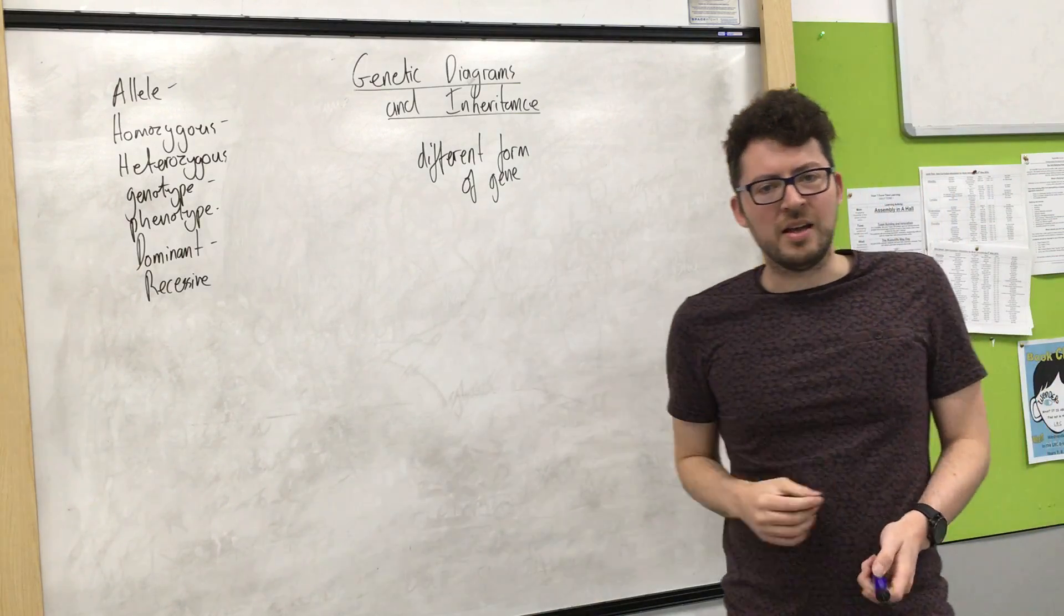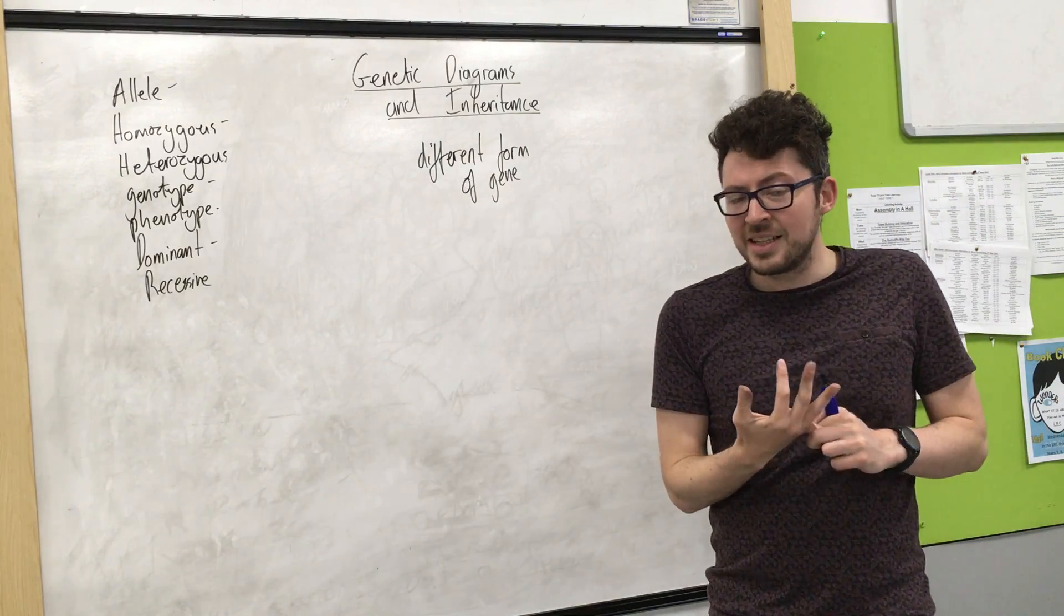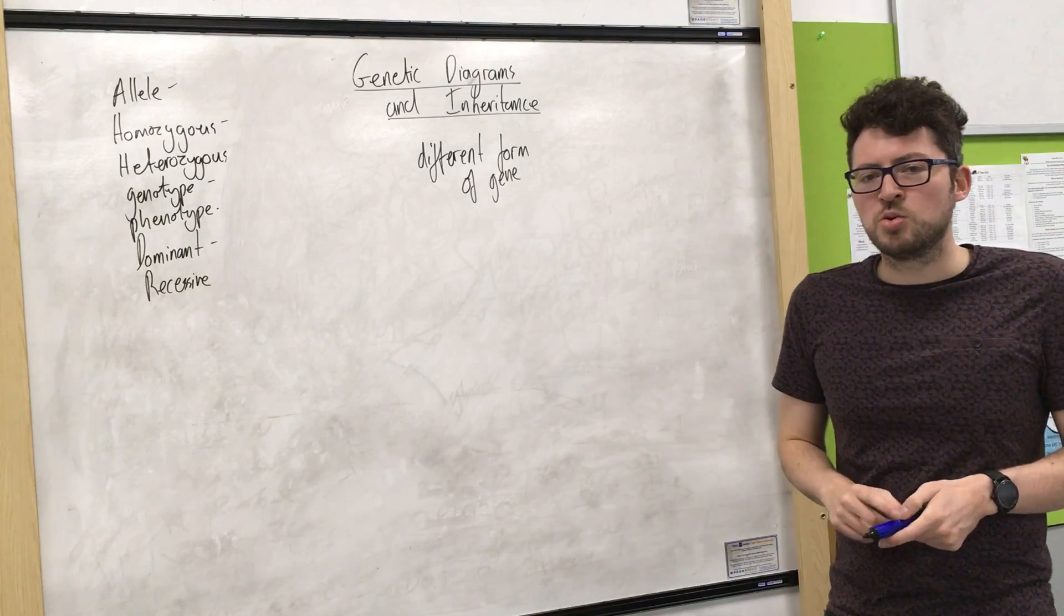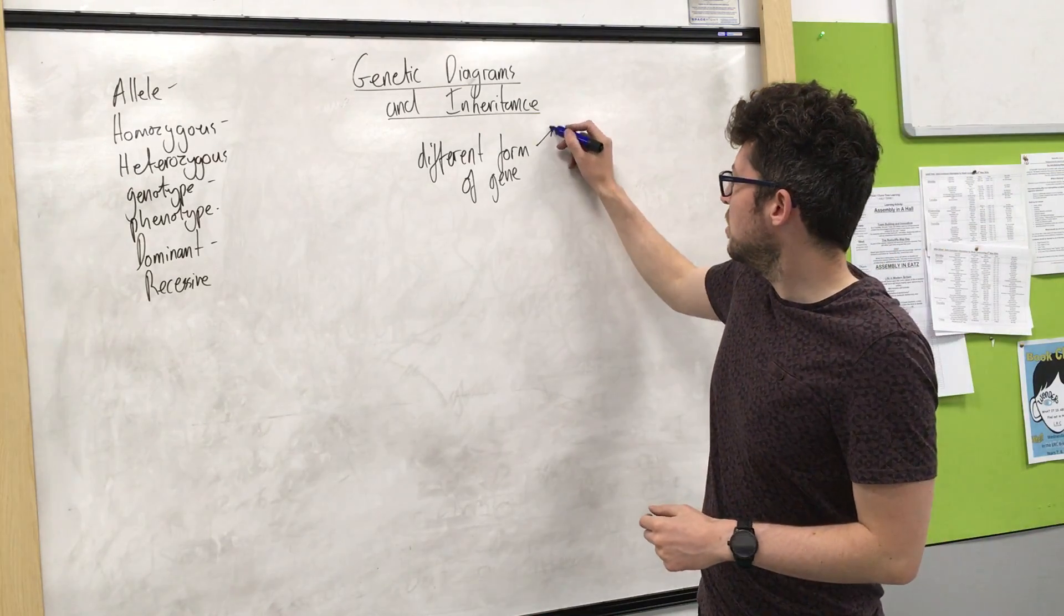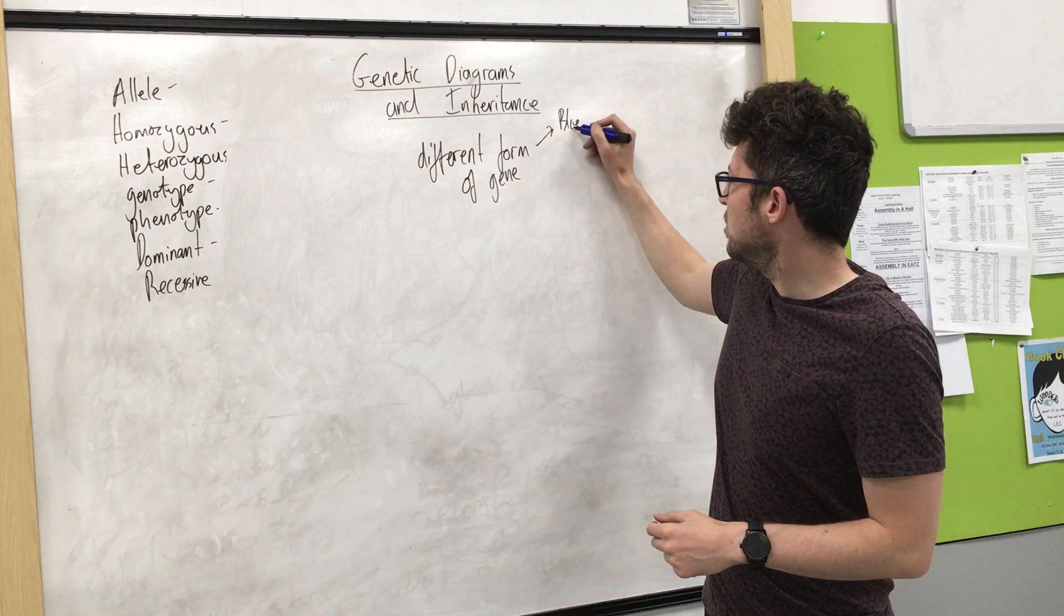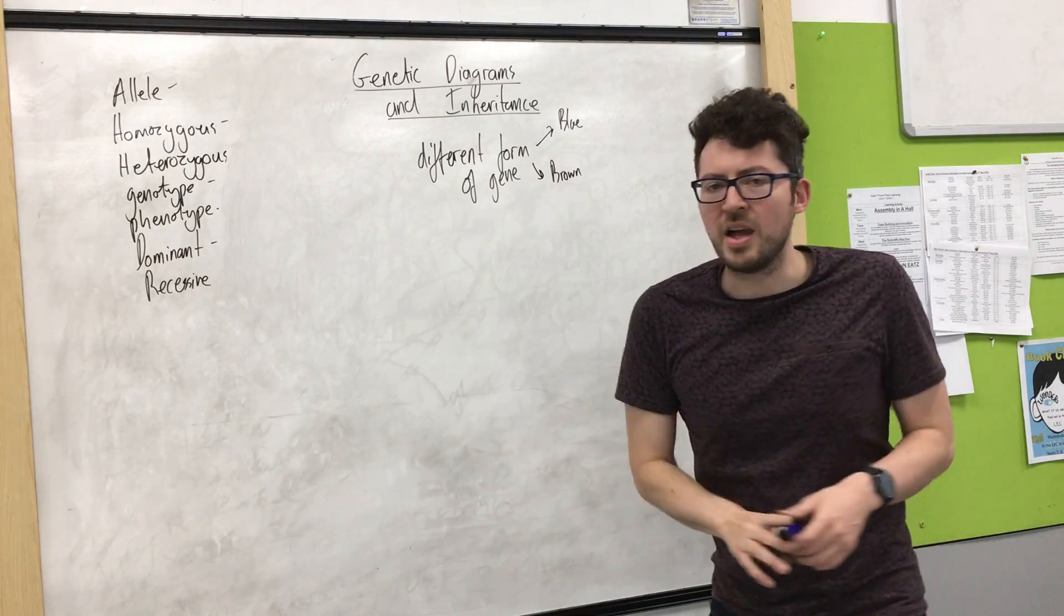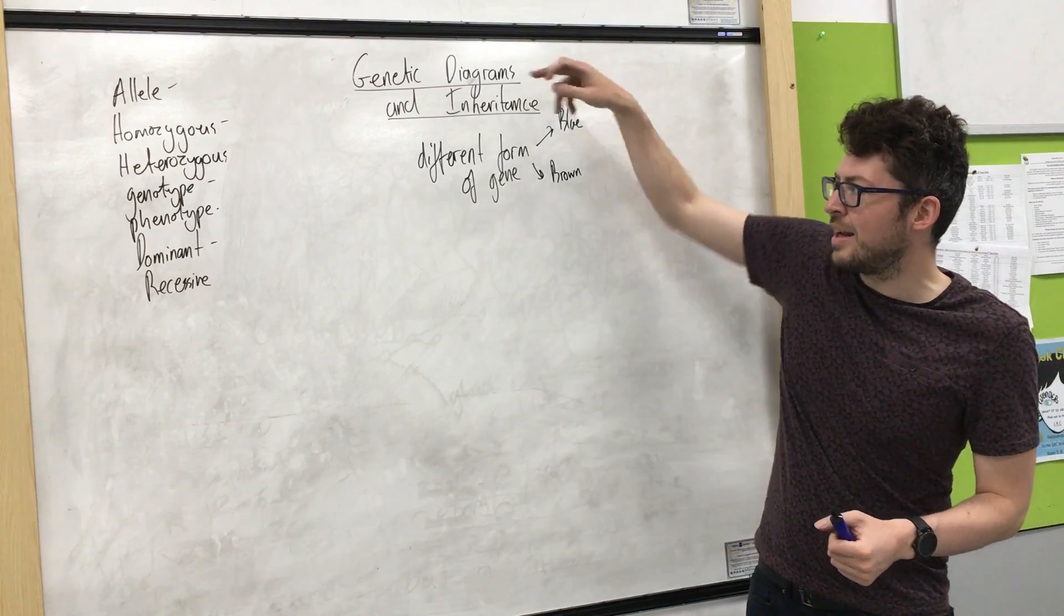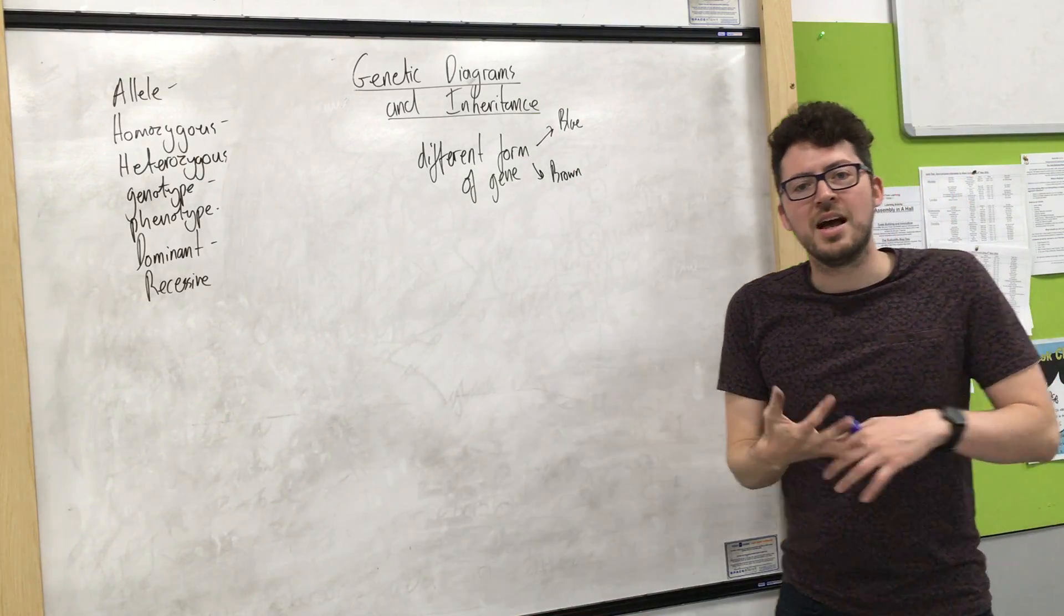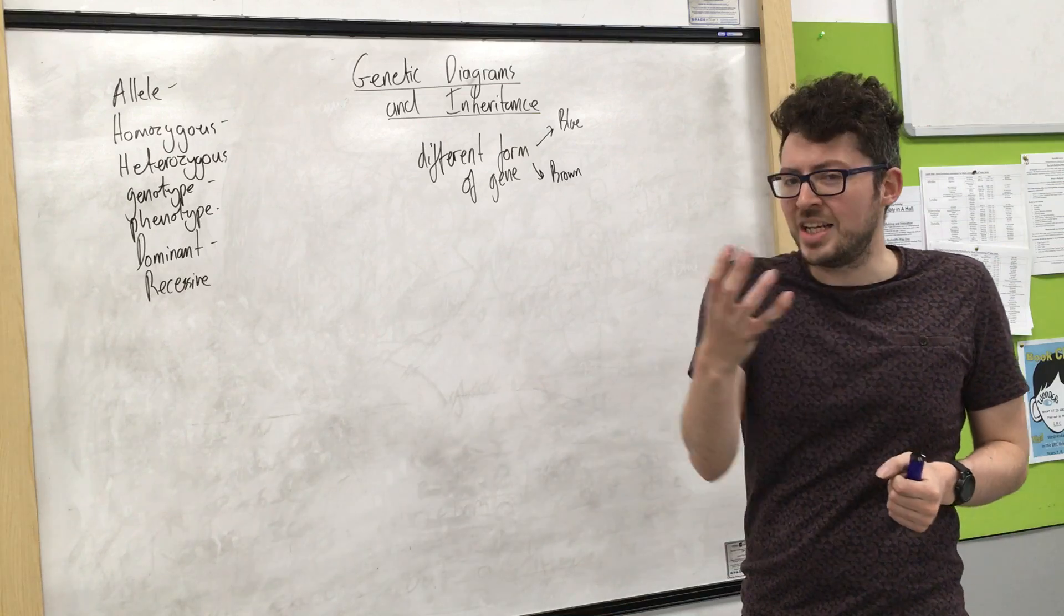So let's say we're looking at eye colour and let's say just to simplify it there are only two potential eye colours, blue and brown. So the allele would be a blue allele or a brown allele which would be the potential genes.